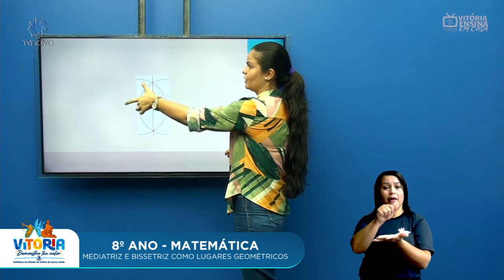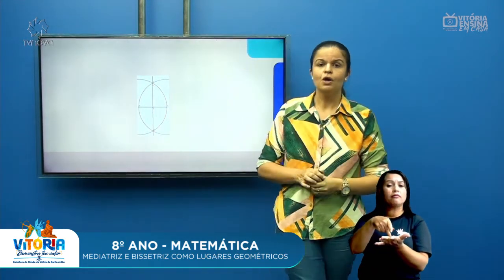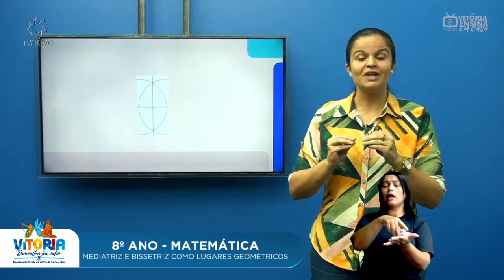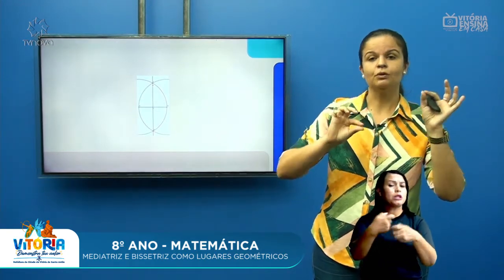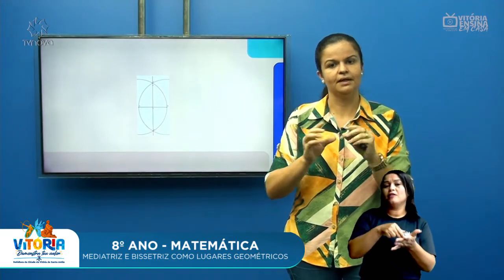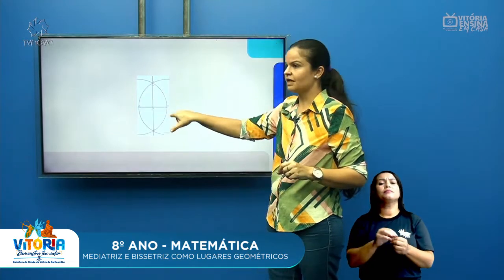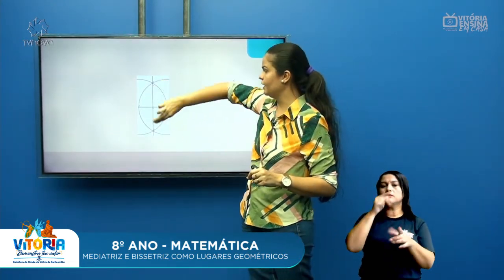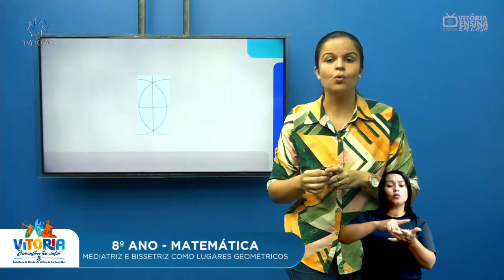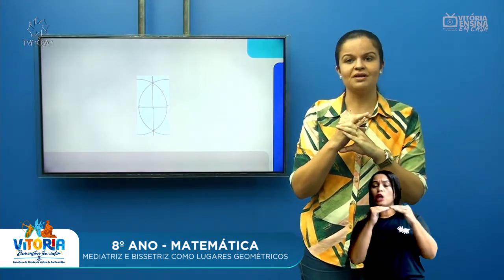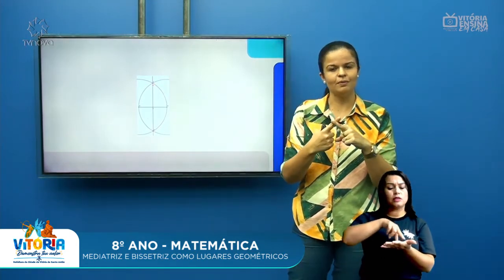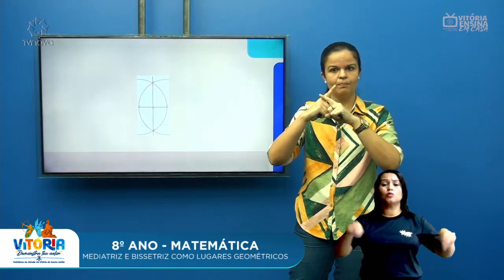Fixei a ponta seca no ponto A, abri o compasso maior do que a metade e tracei um meio arco. Com a mesma abertura do compasso, sem mudar, coloquei no ponto B e tracei outro meio arco até os dois arcos se encontrarem. Se o compasso mover e sair da abertura fica com dois riscos, então tem que ter um traço firme e único.